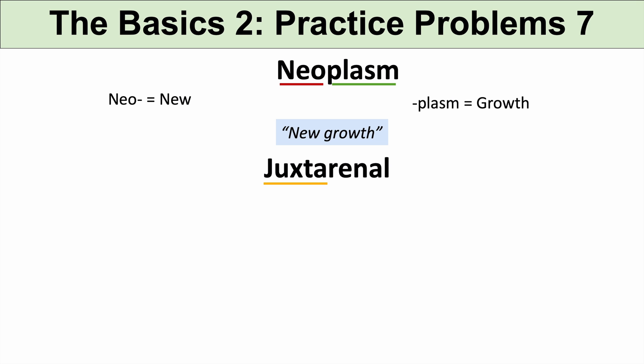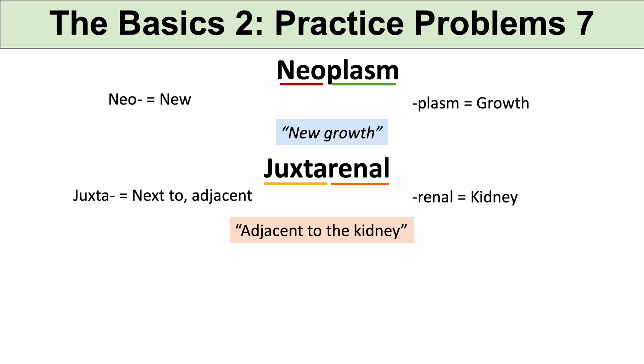The next term is juxtarenal. The prefix juxta means next to or adjacent. And the suffix renal refers to the kidney or kidneys. So juxtarenal means adjacent to the kidneys.